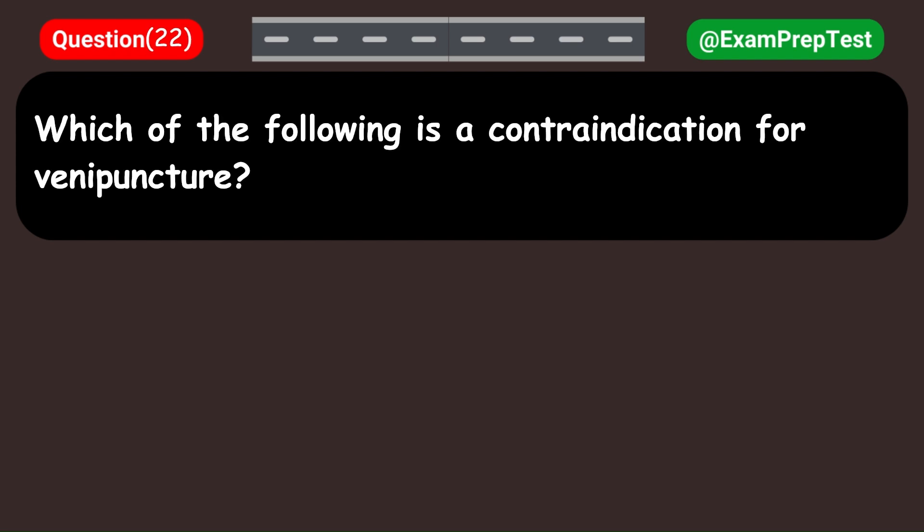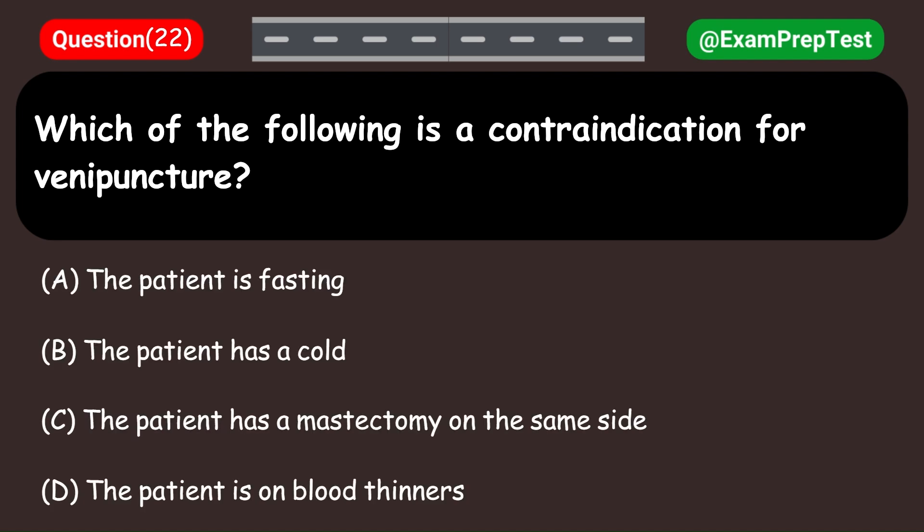Which of the following is a contraindication for venipuncture? A. The patient is fasting. B. The patient has a cold. C. The patient has a mastectomy on the same side. D. The patient is on blood thinners. Answer: C. The patient has a mastectomy on the same side.